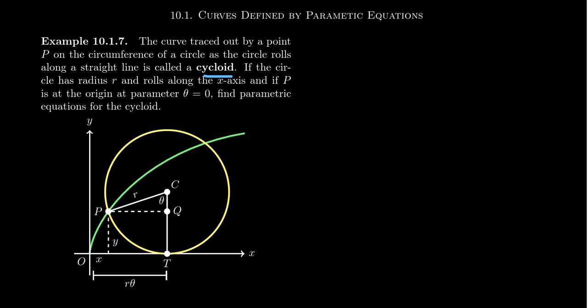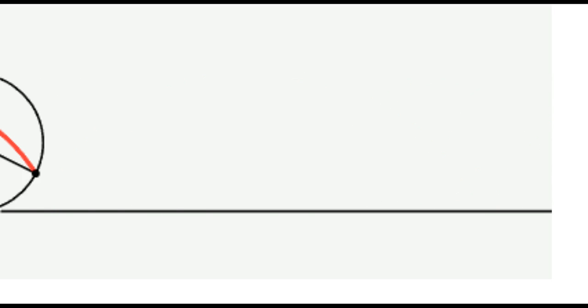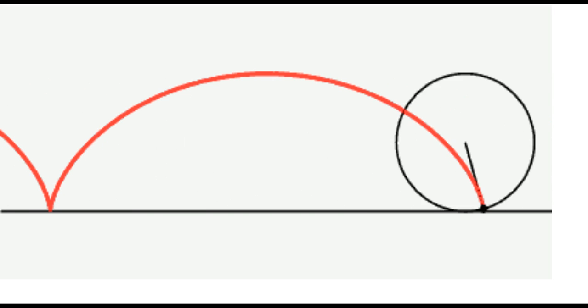We want to think of the point that's traced out as the circle rolls along a straight line, which we'll say is the x-axis. To help give a better illustration of this, I'm actually going to use a graphic, a gif that I've taken courtesy of Wikipedia.